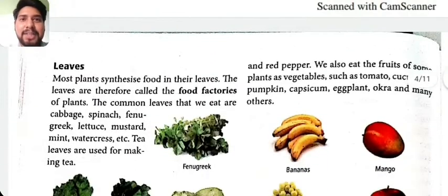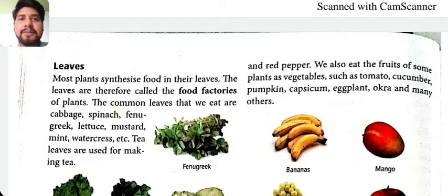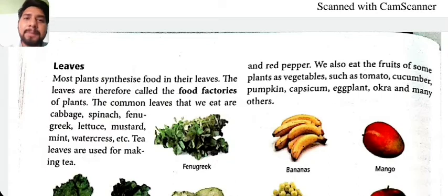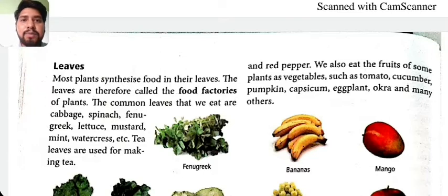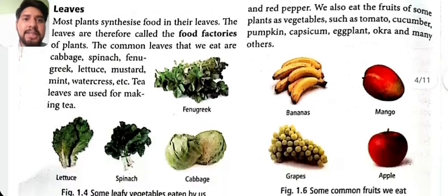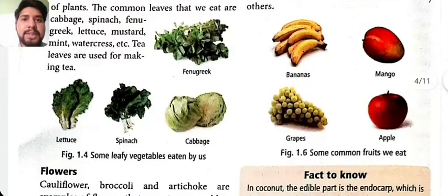Most plants synthesize food in their leaves. Leaves are therefore called the food factories of the plant. The common leaves that we eat are cabbage, fenugreek, mustard, mint, and watercress. Tea leaves are used for making tea.